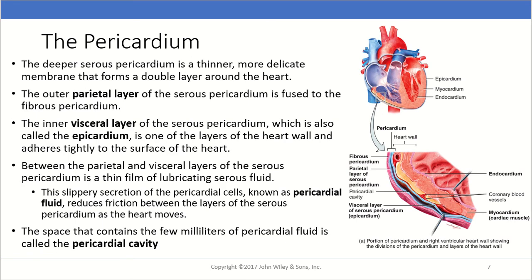The second part is the deeper serous pericardium — a thinner, more delicate membrane that forms the double layer around the heart. The outer parietal layer of the serous pericardium fuses to the fibrous pericardium. The inner visceral layer, also called the epicardium, is one of the layers of the heart wall and adheres tightly to the surface of the heart. Between the parietal and visceral layers is a thin film of lubricating serous fluid known as pericardial fluid, which reduces friction between the layers as the heart moves.